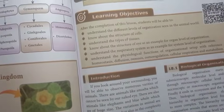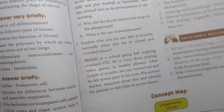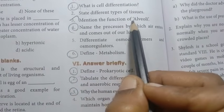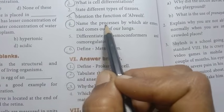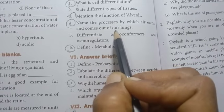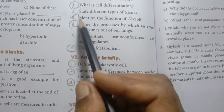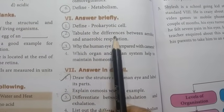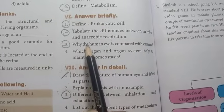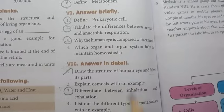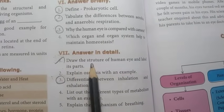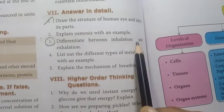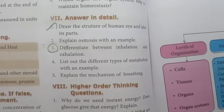Unit 18: Organization of Life, page number 216. Answer very briefly: What is cell differentiation? Mention the function of alveoli — previous year question. Name the processes by which air enters and comes out of our lungs. Define metabolism — important. Answer briefly: Define prokaryotic cell — important. Tabulate the differences between aerobic and anaerobic respiration. Why is the human eye compared with a camera? — important. Detail: Draw the structure of the human eye and label the parts — previous year question. Differentiate between inhalation and exhalation — important question.